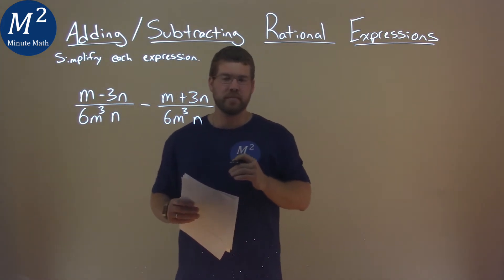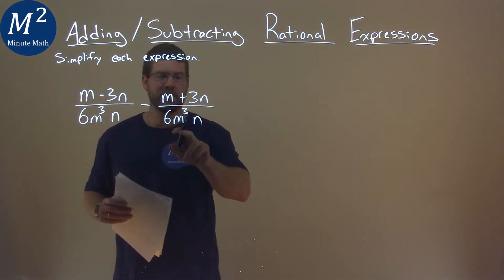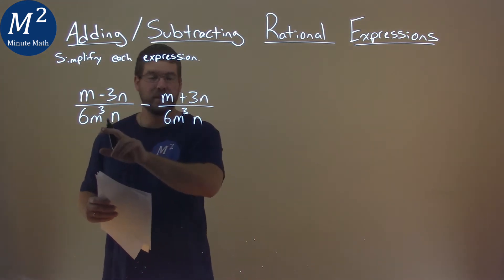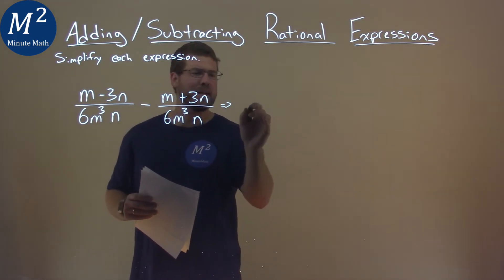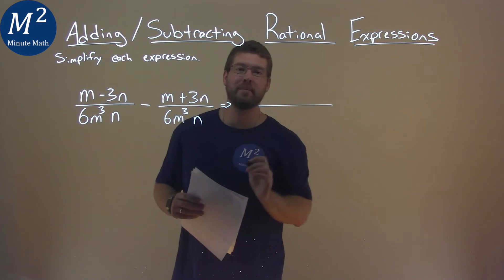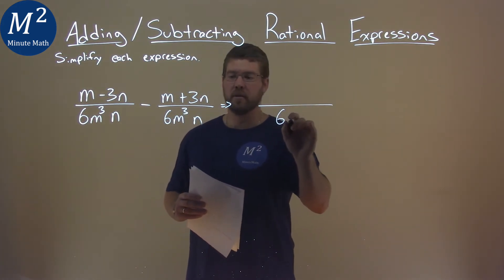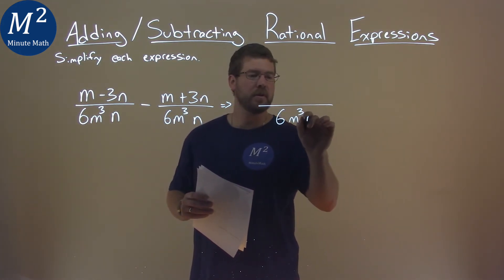And we have to simplify this. Well, first thing that's great is these two fractions have the same denominator, 6m to the third power times n. So we know we can instantly combine them to be one big fraction with a denominator of 6m to the third times n.